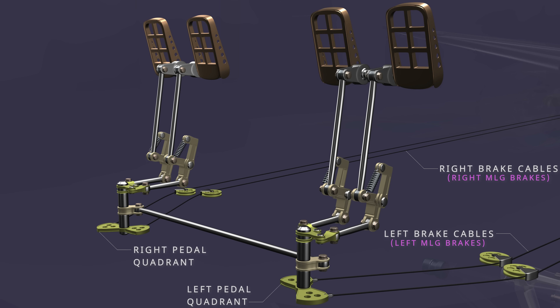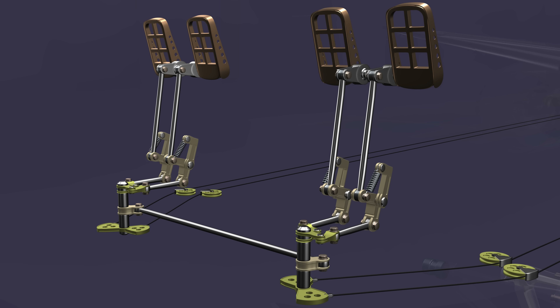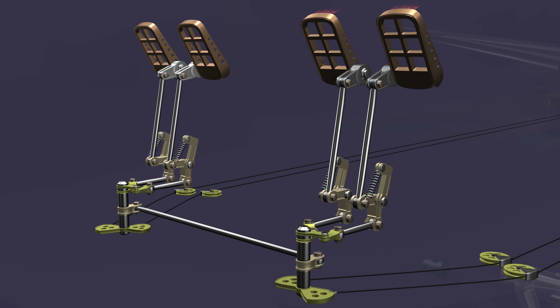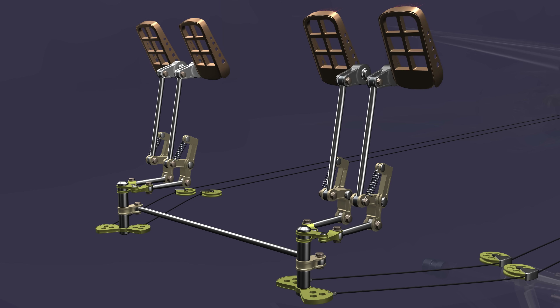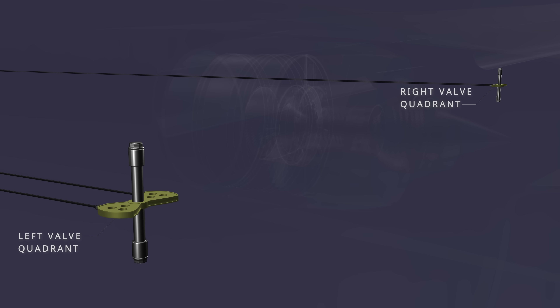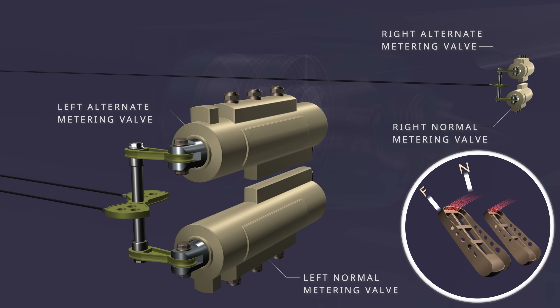The nose landing gear is not equipped with hydraulic brakes. The transverse control rod connects the left and right bus crank assemblies. This ensures the force applied to any one set of pedals simultaneously operates the other set and activates the left and right main landing gear brakes together. The other end of the control cables are connected to the brake valve quadrants. The valve quadrants operate the brake metering valves. Each main landing gear brake system has two metering valves. The brake pedal input operates both valves at the same time.